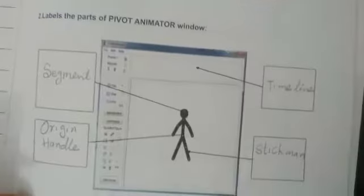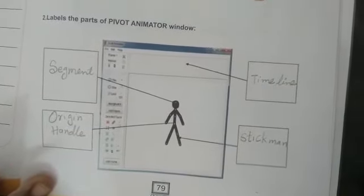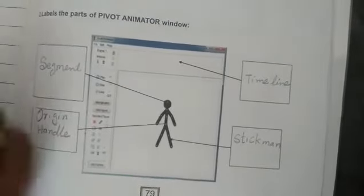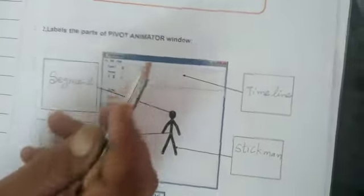Good morning children. Today we are going to do the activity on page number 79. See, second bit children, label the parts of Pivot Animator window.